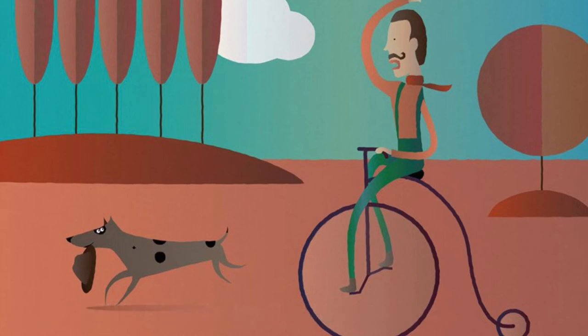Mulga Bill's Bicycle by A.B. Banjo Patterson